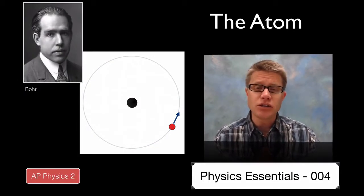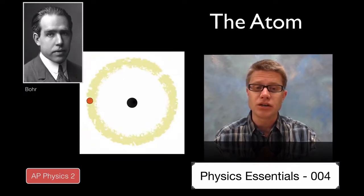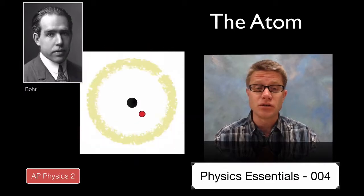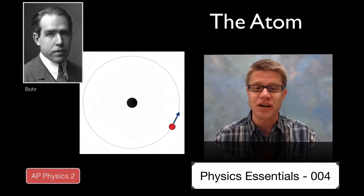He knew that any charged particle that is moving is going to be giving off electromagnetic radiation. As it does that, it is losing some of that energy and so it is going to quickly spiral into the middle and annihilate essentially the whole atom. So he knew that wasn't right.